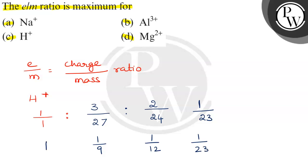So, denominator value more hai na. Oska toho kam hata hai. E by M value ratio. Which is highest one? Hydrogen is first highest. Next 1 by 9. Next 1 by 12.